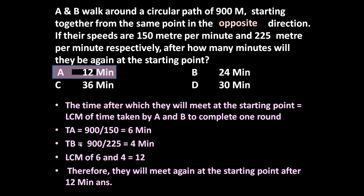A will take 6 minute to complete one round. B will take 4 minute to complete one round. And they will meet again at the starting point that is equal to LCM of 6 and 4, that is 12. So again, whether they are moving in same direction or they are moving in opposite direction, they will be meeting at the starting point after 12 minutes.